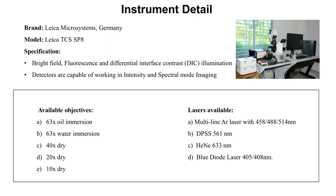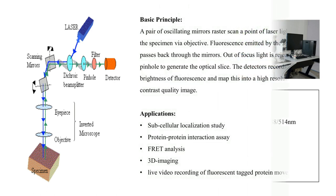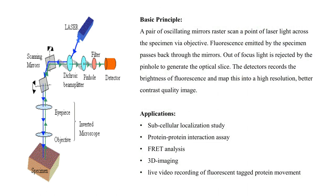The basic principle of the confocal microscope is that a pair of oscillating mirrors raster scan a point of laser light across the specimen via the objective. The fluorescence emitted by the specimen passes back through the mirror system to a beam splitter, which rejects any reflected excitation wavelength, and then through the pinhole to generate an optical slice. The detector records the brightness of fluorescence at each raster point and maps this into a high-resolution, high-contrast image.